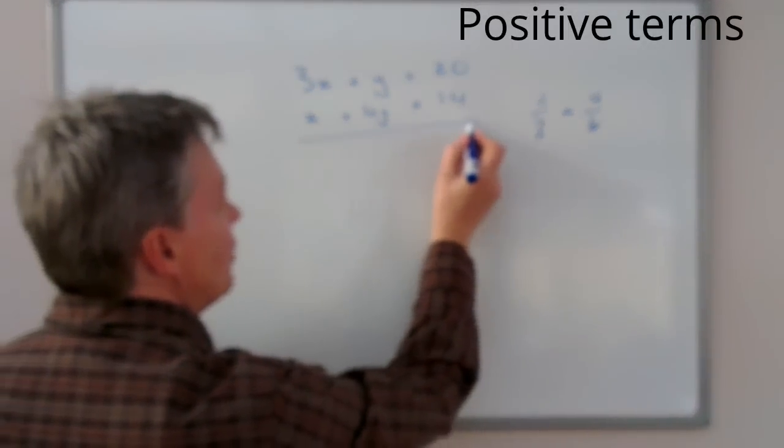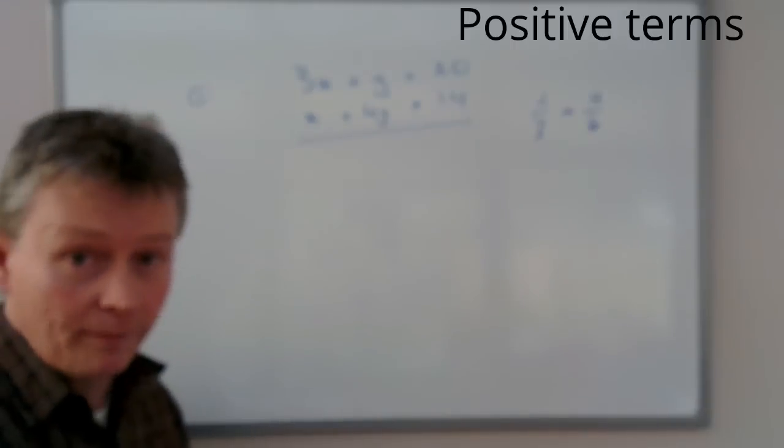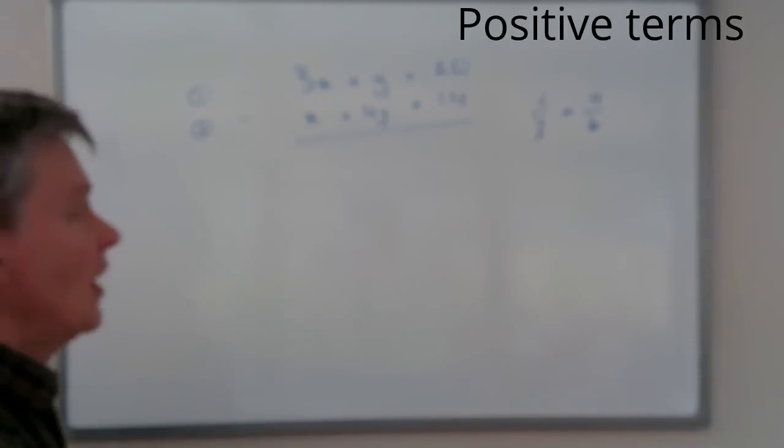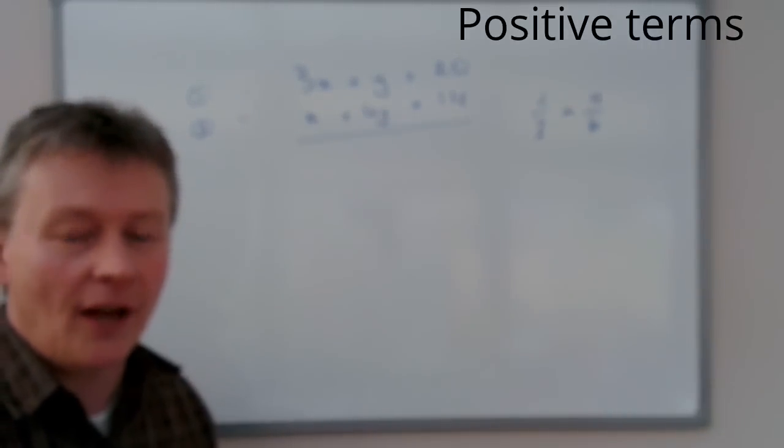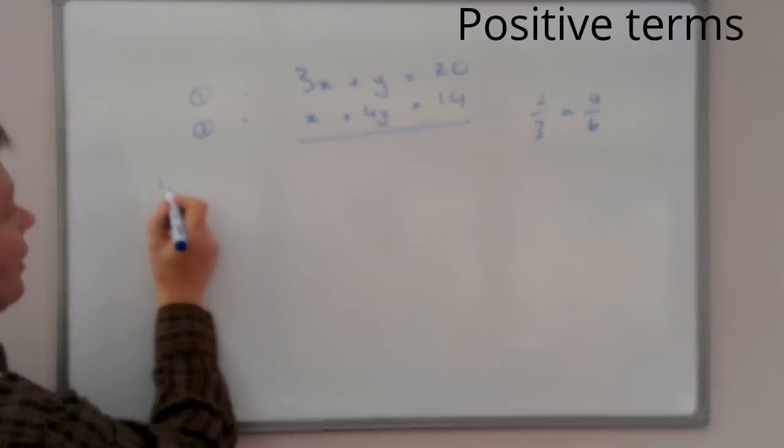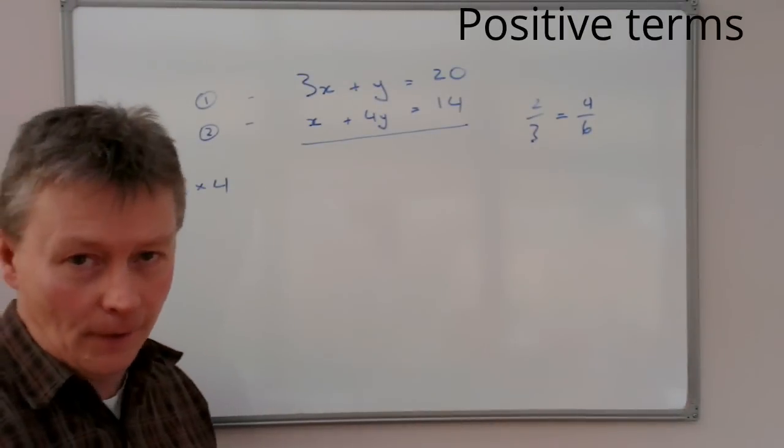So the easiest way is to number both equations. I'm going to call that equation 1 and I'm going to call this one equation 2. Now, with equation 1, I'm going to multiply that by 4. So, just in the margin here, I'm going to write equation 1 times 4.